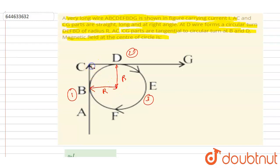And if I draw a dotted line like this, then this angle will be 45 degrees and this angle will also be equal to 45 degrees. And we know that because of a current carrying wire...